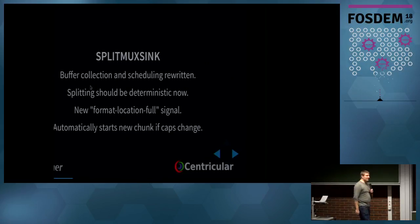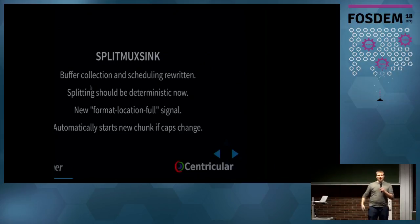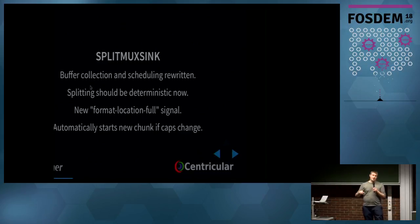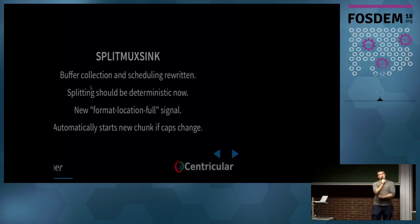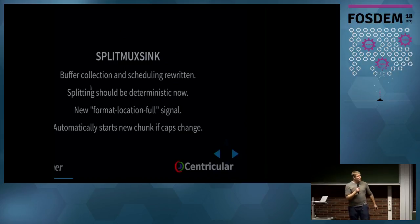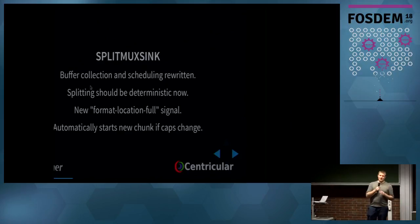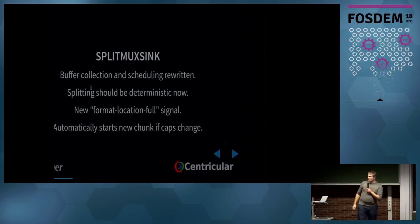SplitMuxSink fragments your media stream — you can say, create a new file every so many megabytes, gigabytes, seconds, minutes, or hours. It takes your encoded streams and splits them, and it works with any container, even those that don't support that natively — Matroska, MP4, whatever you want. It has been rewritten to be more deterministic and stable. There's also a new format-location-full signal which gives you the first buffer of a new fragment so you can read metadata, timestamps, and other information for special file names or custom responses.